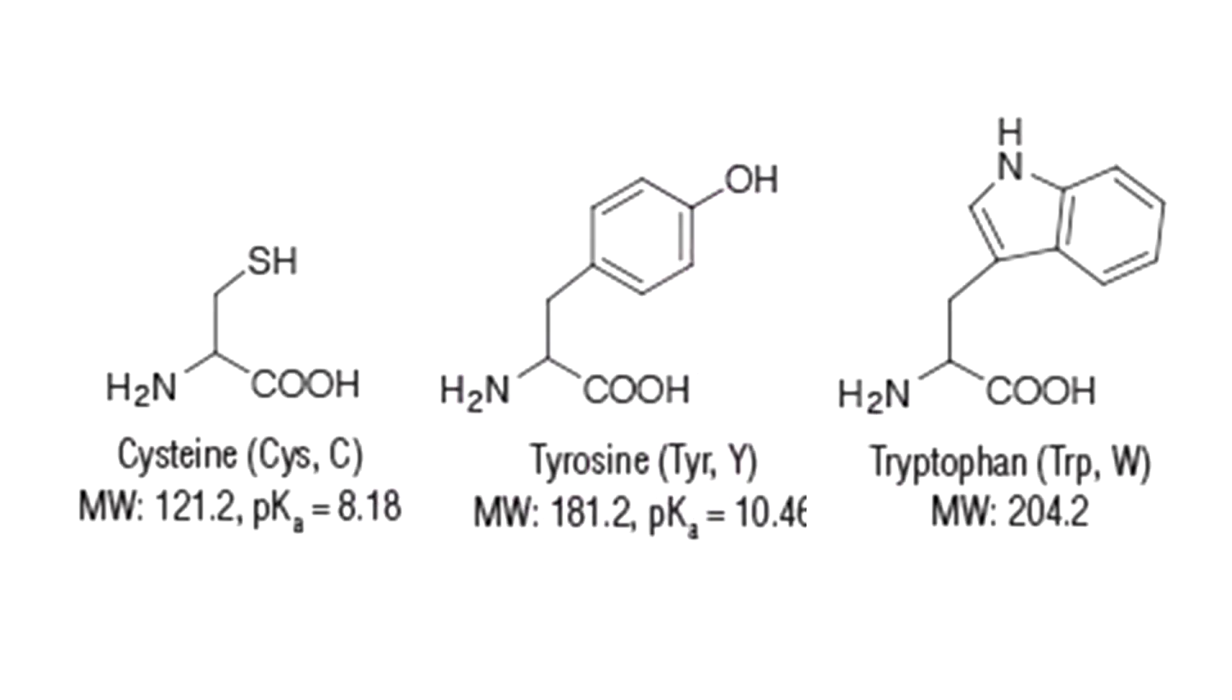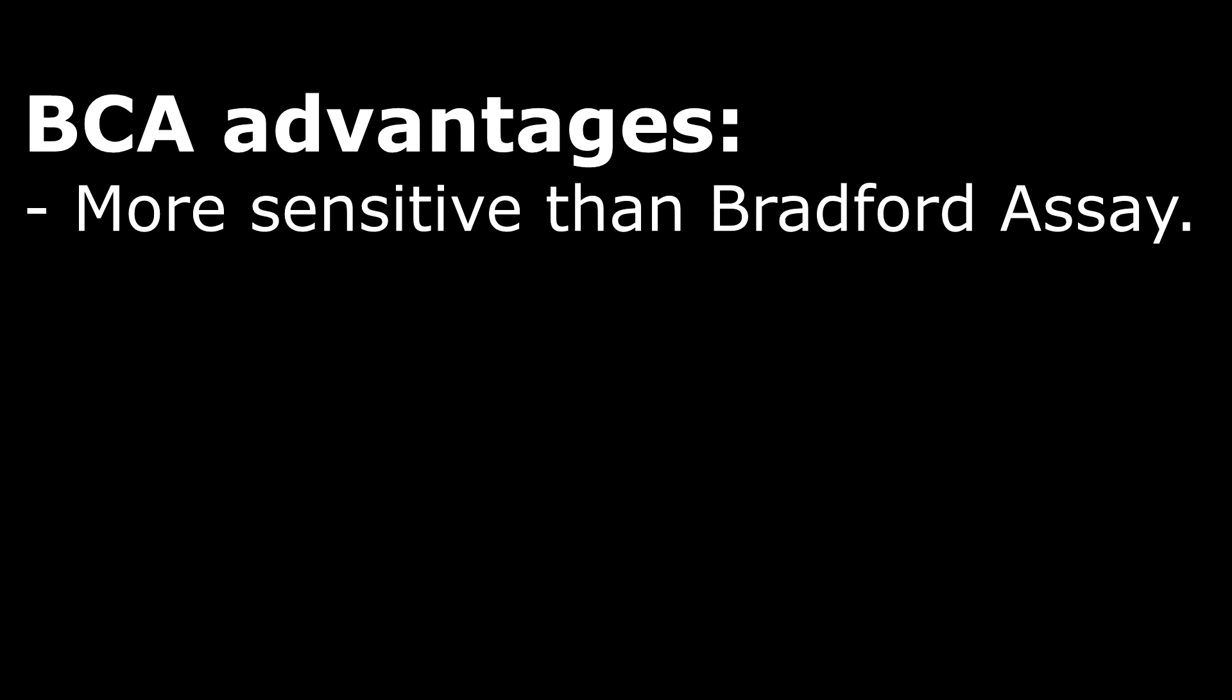The BCA copper complex is influenced in protein samples by the presence of cysteine, tyrosine, and tryptophan side chains. At higher temperatures, such as 37 degrees Celsius, the peptide bonds assist in the formation of the reaction complex.